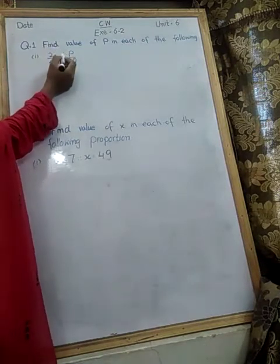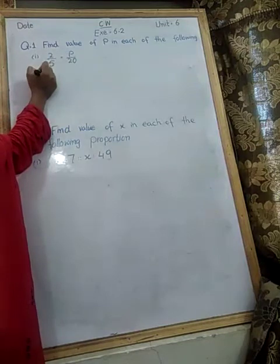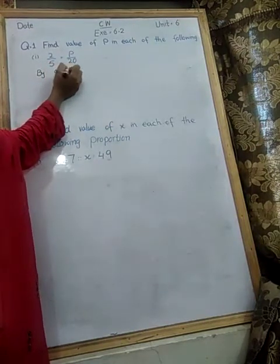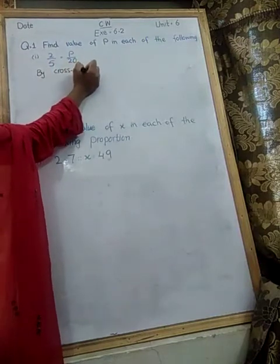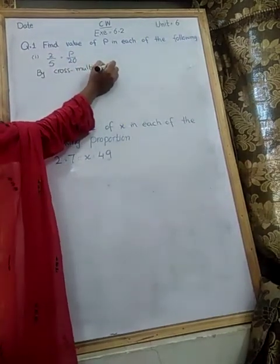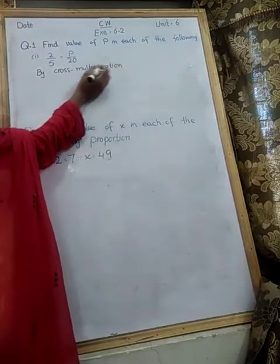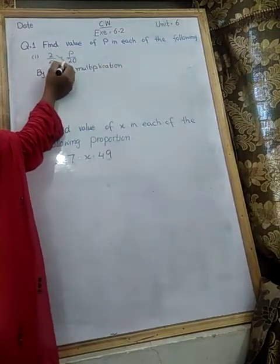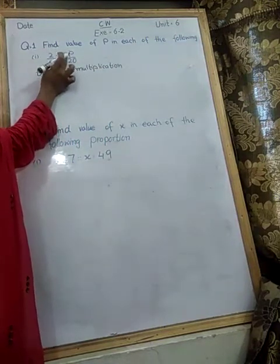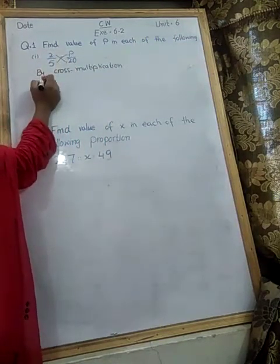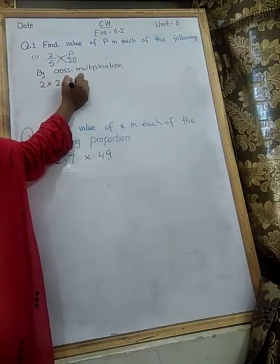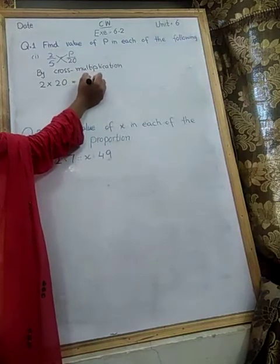So we will use the method of cross multiplication. What will we do here? By cross multiplication. How do you do cross multiplication? You have to cross and multiply. 2 will multiply with 20 and 5 will multiply with P. So here we will write 2 multiplied by 20, then equals, and then 5 multiplied by P.